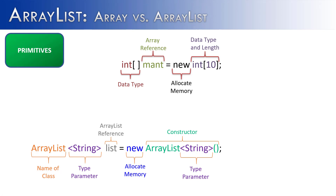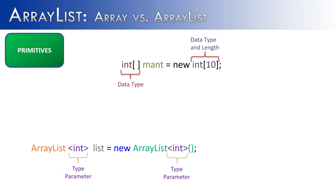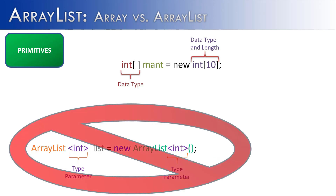The next difference is in terms of primitives. That array is already holding int primitives. But if we tried to do the same thing with an array list and store primitives inside of it, it wouldn't work — because array lists cannot hold primitives. They can only hold objects. That's one of the reasons why Java has a corresponding wrapper class to every primitive, because the wrapper class is an object that wraps around a primitive.